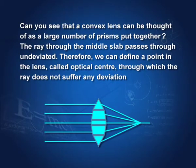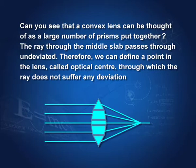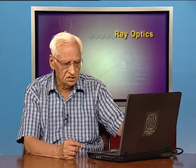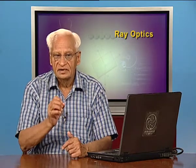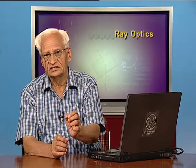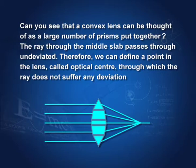A double convex lens can be thought of as being made of several prisms. Each prism refracts a ray in a particular direction — rays near the edge are refracted more, while the ray in the middle passes through a slab and is not refracted at all, with no change in its path. So we find that in the middle of the lens there is a point through which a ray can pass undeviated. This point is called the optical center of the lens. Note carefully: the optical center is not necessarily the geometrical center of the lens — it is any point in the lens through which a ray can pass undeviated.